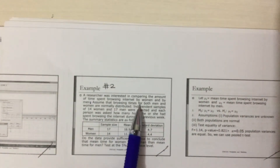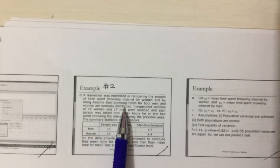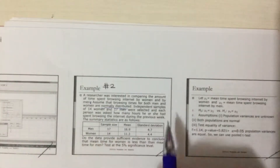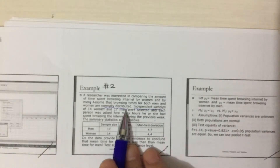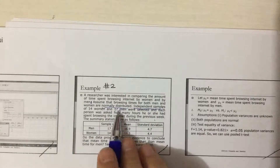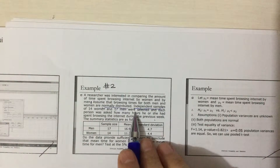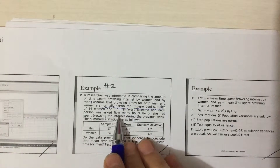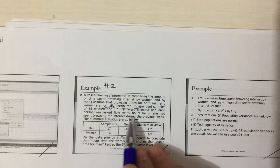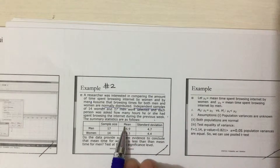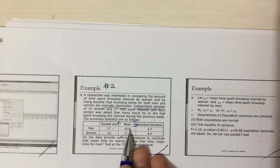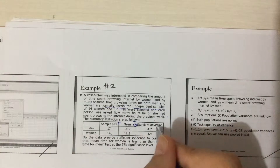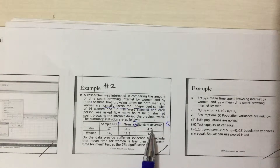Assume that browsing times for both men and women are normally distributed. These are independent samples. The sample sizes are 14 women and 17 men. Each person was asked how many hours he or she had spent browsing the internet during the previous week. For men and women, the sample size n is 17 and 14, the mean x-bar is 16.9 and 11.3, and the standard deviation s is 4.7 and 4.4.